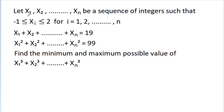In this video, we have given that x₁, x₂ up to xₙ be a sequence of integers such that -1 ≤ xᵢ ≤ 2 for i = 1, 2 up to n, and x₁ + x₂ + ... + xₙ = 19, and x₁² + x₂² + ... + xₙ² = 99. Then we have to find the minimum and maximum possible value of x₁³ + x₂³ + ... + xₙ³.